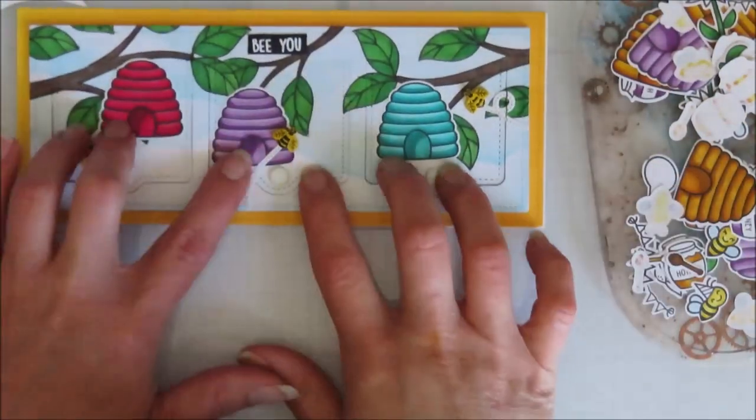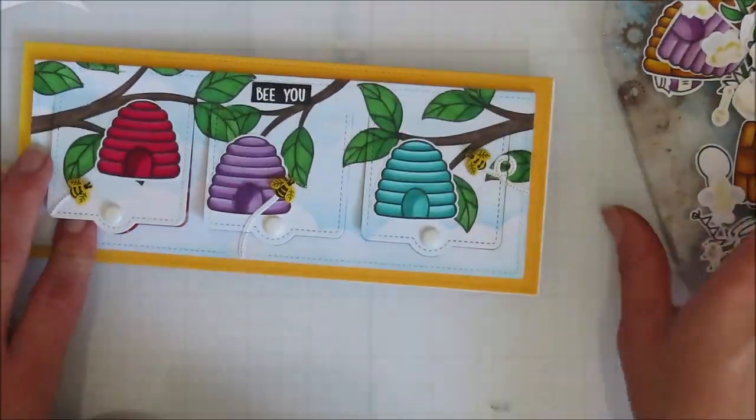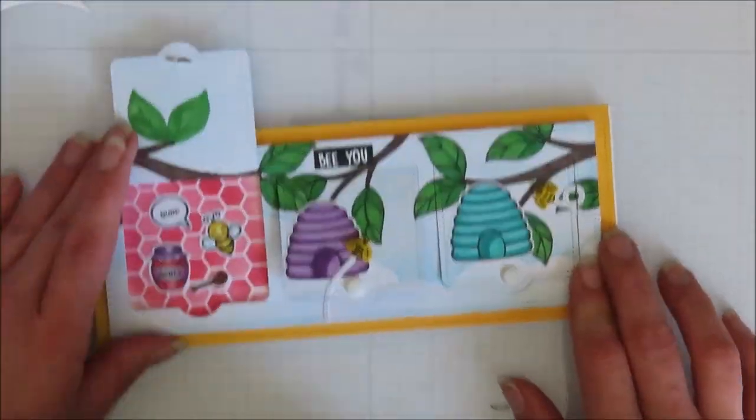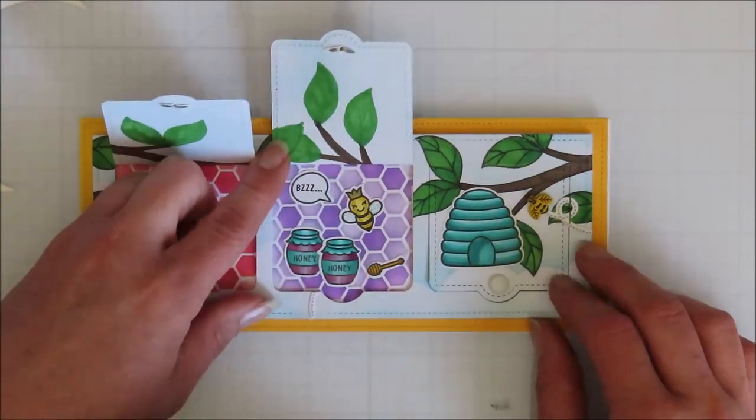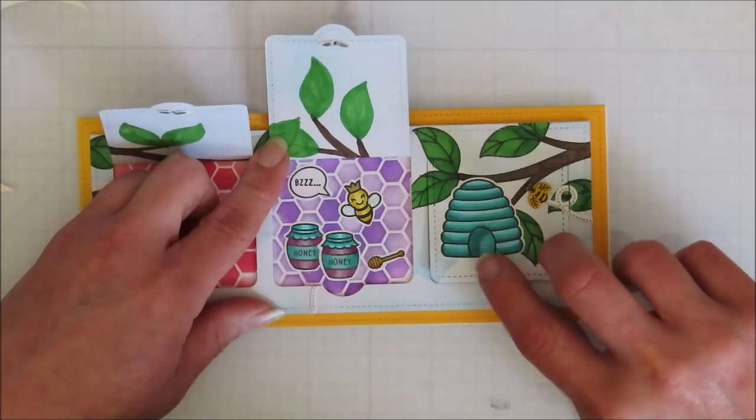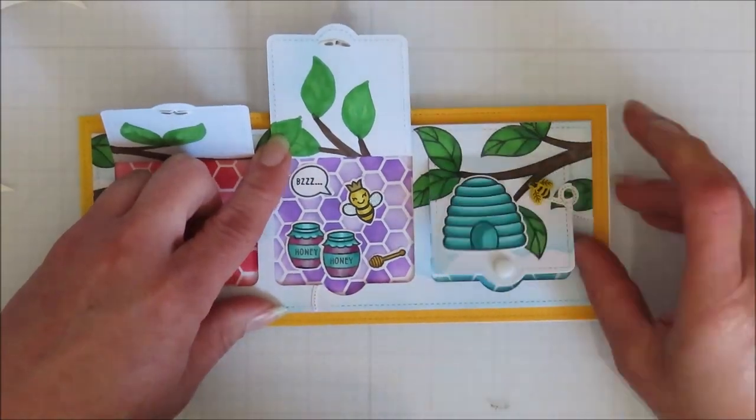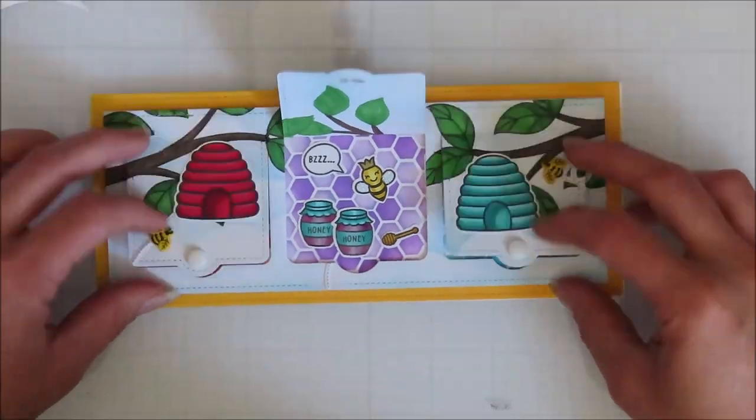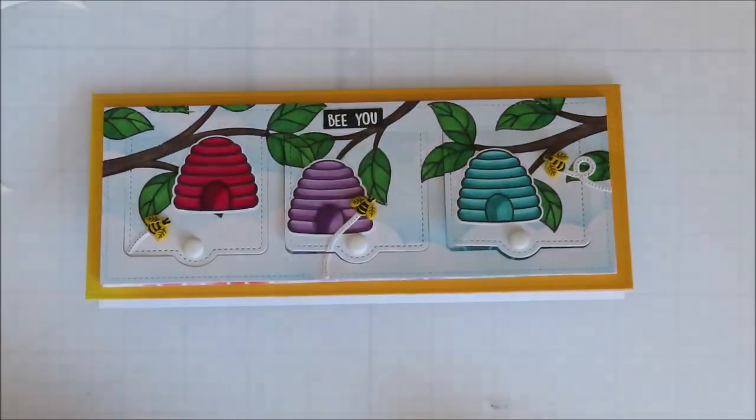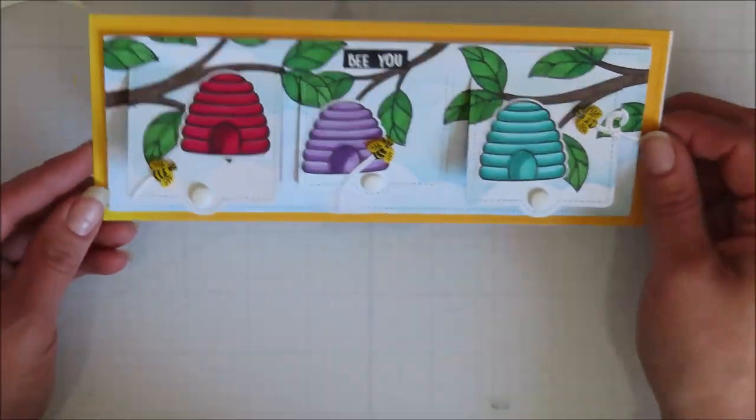So there is the finished card front with the different colored hives and the coordinating honey on the inside. And I love those three colors together. They're so pretty.